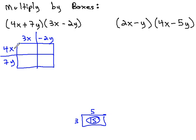This first box has 4x by 3x. 4x times 3x is 12x squared. Moving on to the second box, we see it's got 4x by negative 2y for its headers. 4x times negative 2y is negative 8xy.